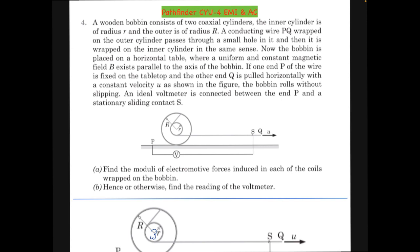The inner cylinder is of radius r and the outer cylinder is of radius capital R. A conducting wire PQ is wrapped on the outer cylinder, passes through a small hole in it, and then is wrapped on the inner cylinder in the same sense.